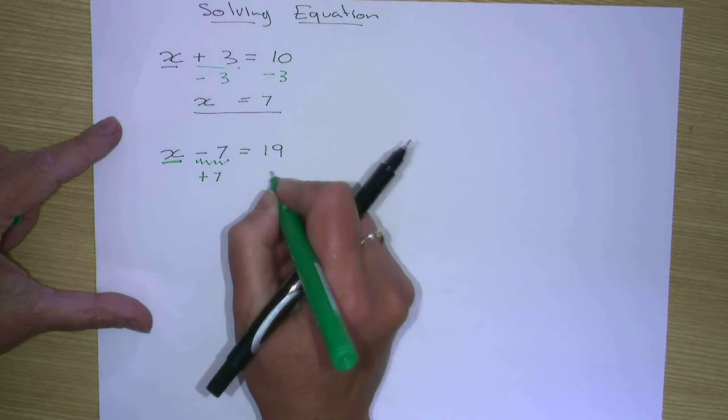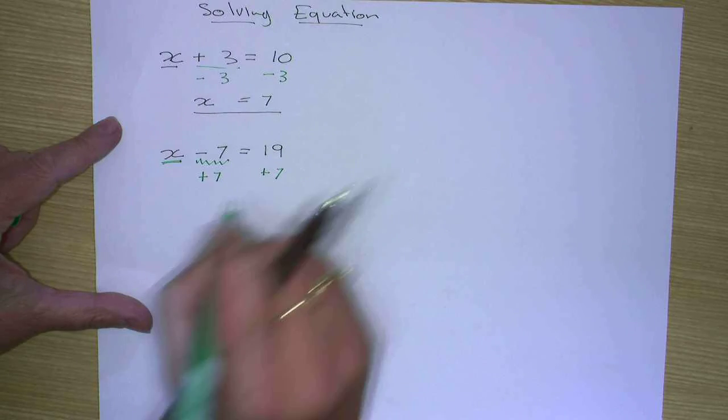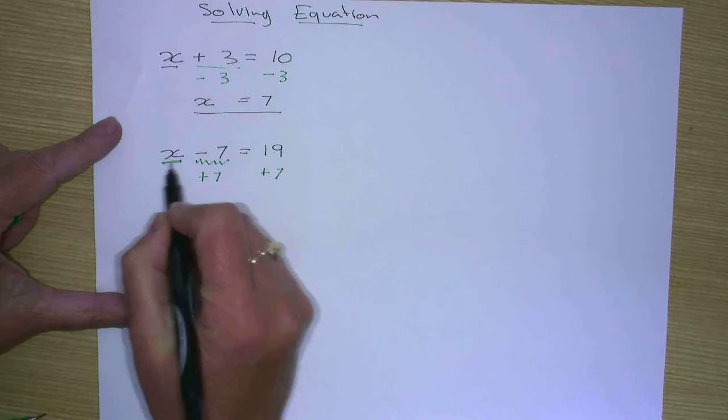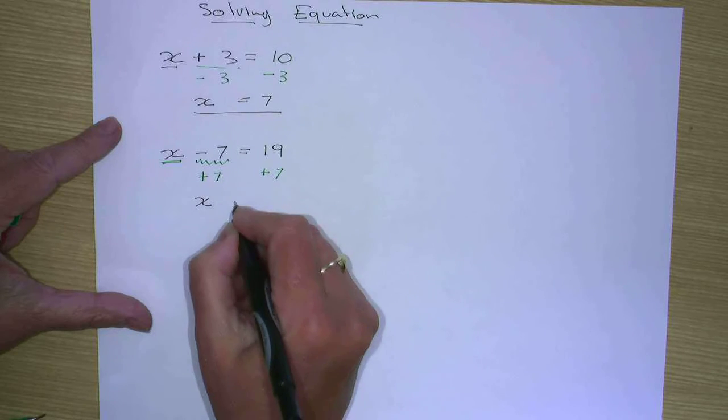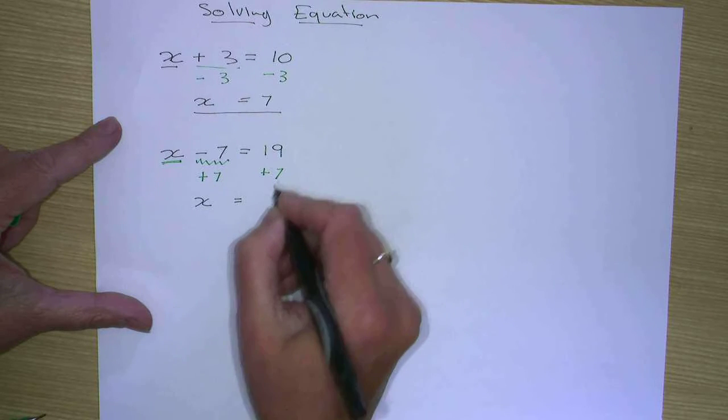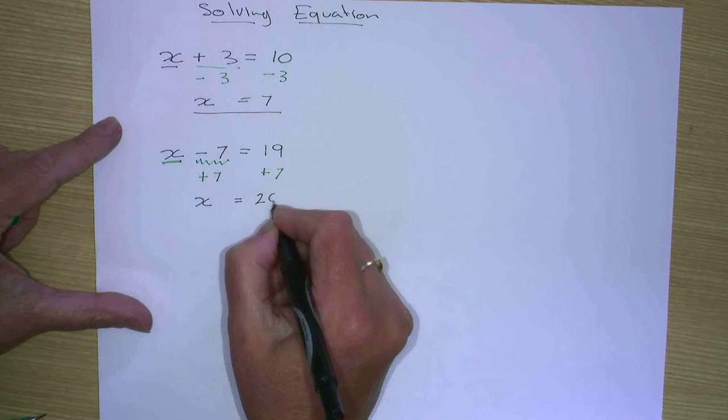Add 7 to this side, we add 7 to this side. So x minus 7 plus 7 leaves us with x, and 19 plus 7 leaves us with 26.